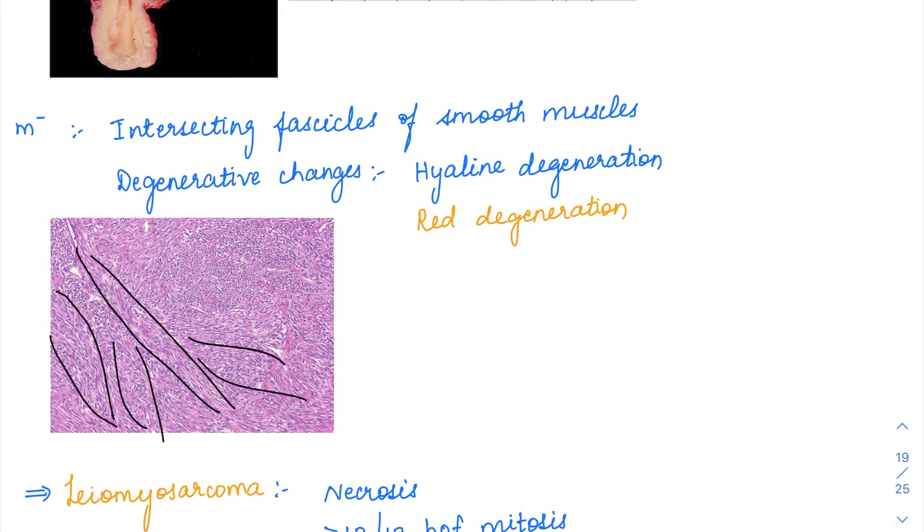These leiomyomas, when they grow in size, can undergo degenerative changes, especially hyaline degeneration where pink material accumulates, or red degeneration. Red degeneration is due to hemorrhage, which usually happens in pregnant females.